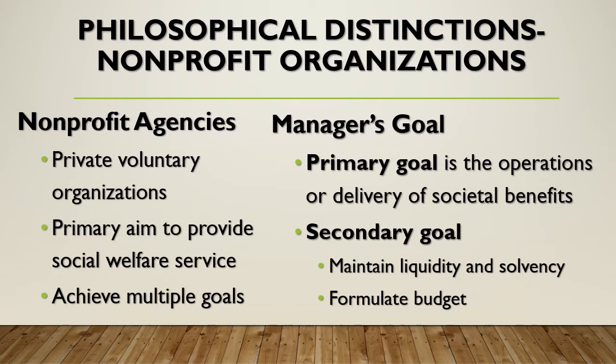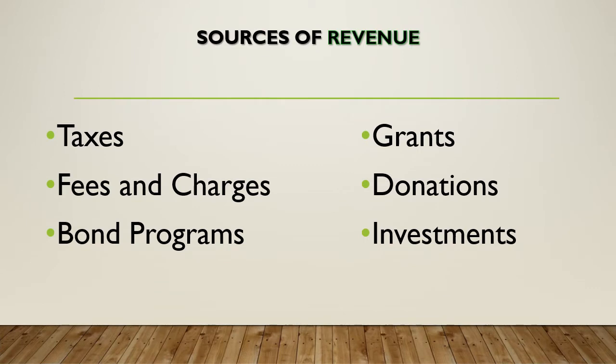The manager's goal in the non-profit is to ensure the operations or delivery of social benefits, moving away from profit-driven motives. The secondary goal is to maintain liquidity and solvency and formulate a budget — basically, make sure we can meet our bills and continue operating. For both profit and non-profit agencies, we can get revenue through fees and charges for services, tax allocations or grants, bond programs, donations, and investments.